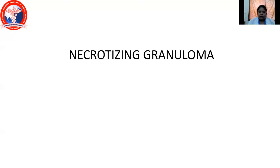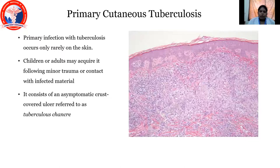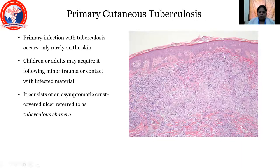Coming to necrotizing granuloma, the first entity is primary cutaneous tuberculosis. It is a primary infection of tuberculosis that occurs only rarely on the skin. Children and adults may acquire it following minor trauma or contact with infected material. It consists of an asymptomatic crust-covered ulcer referred to as tuberculous chancre. This is a microscopic picture where you can see granuloma with necrosis.